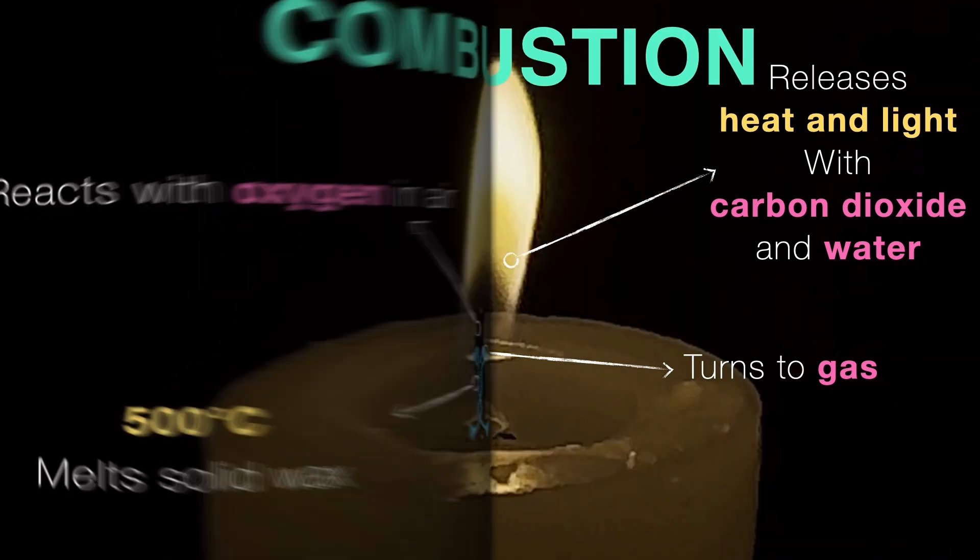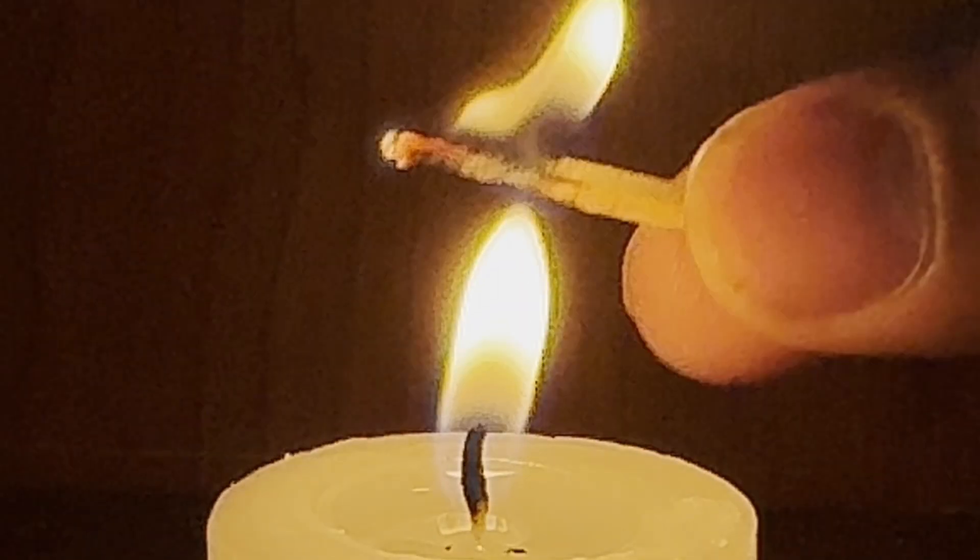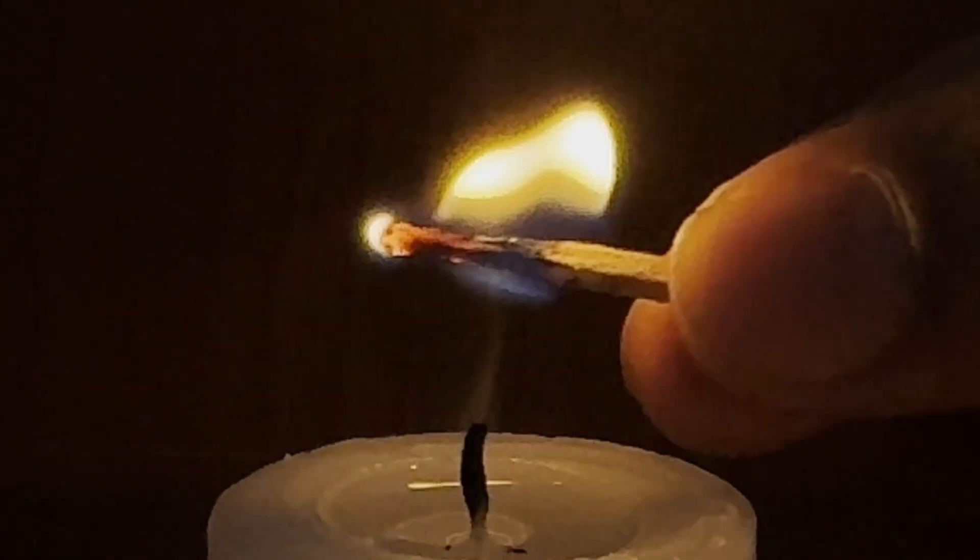And here is something interesting. This gas then reacts with the oxygen in the air and releases heat and light with carbon dioxide and water. This whole process is called combustion. Remember what I showed you in the beginning, the wick catching fire even when the flame didn't touch it directly?